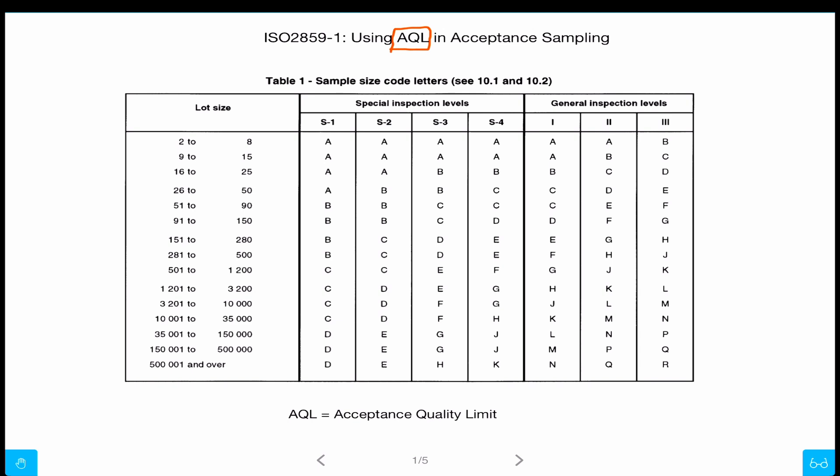This is covered in ISO 2859-1 and some other standards. AQL means Acceptance Quality Limit, and I'm going to go through a simple example here. Usually we go with level 2, and let's say we have a batch of 5000 pieces.